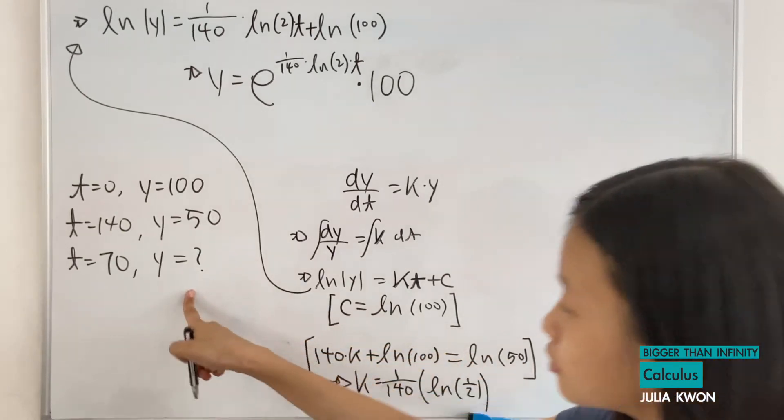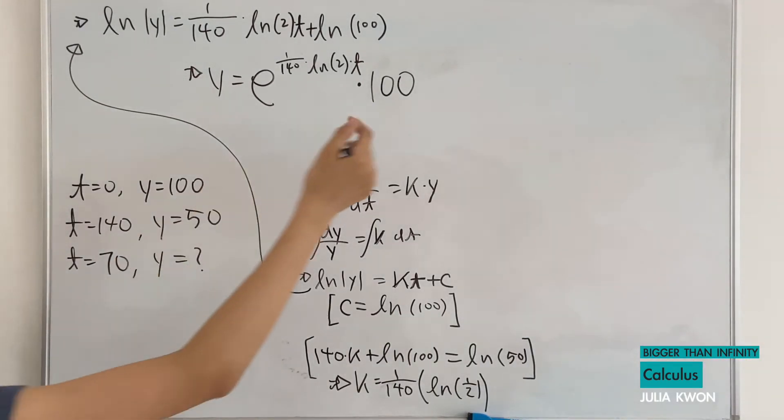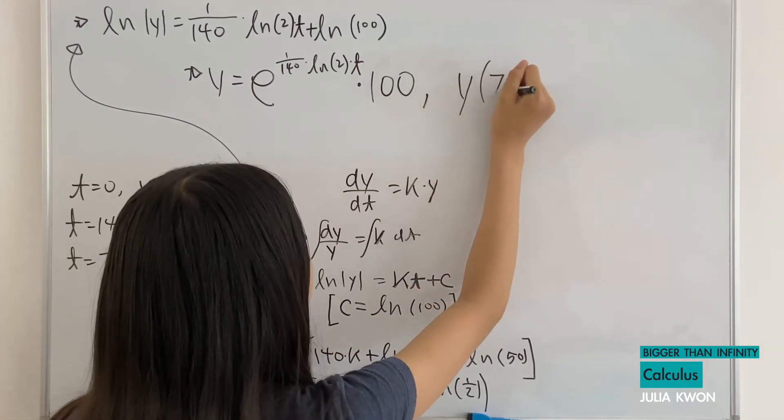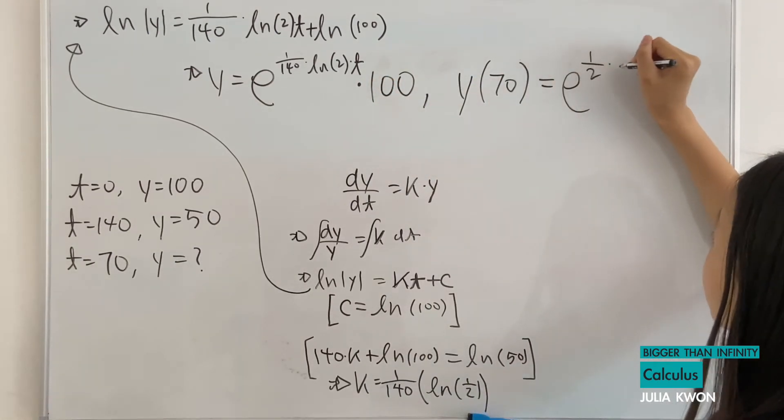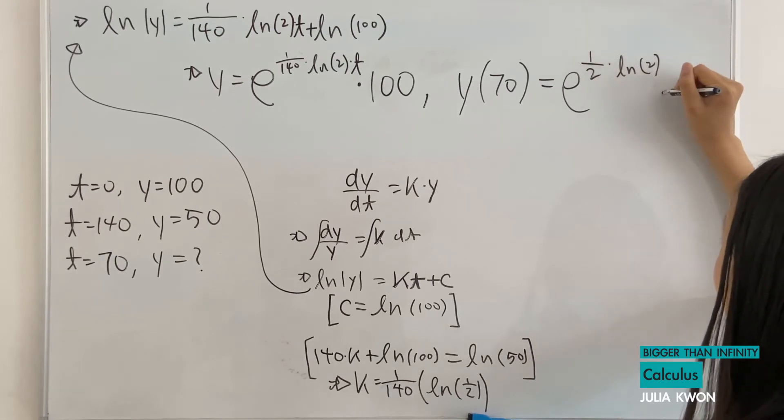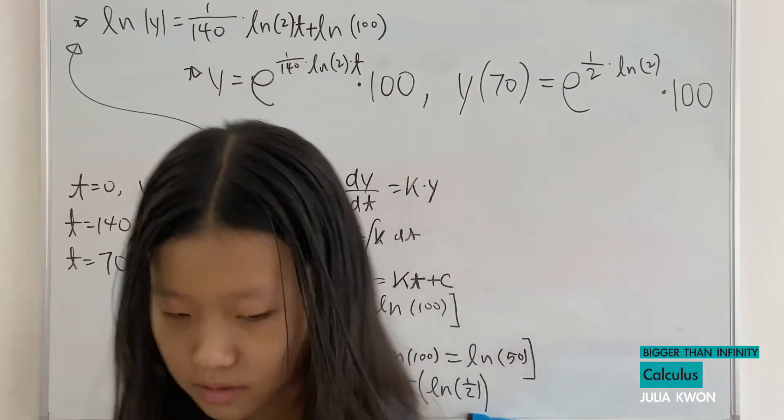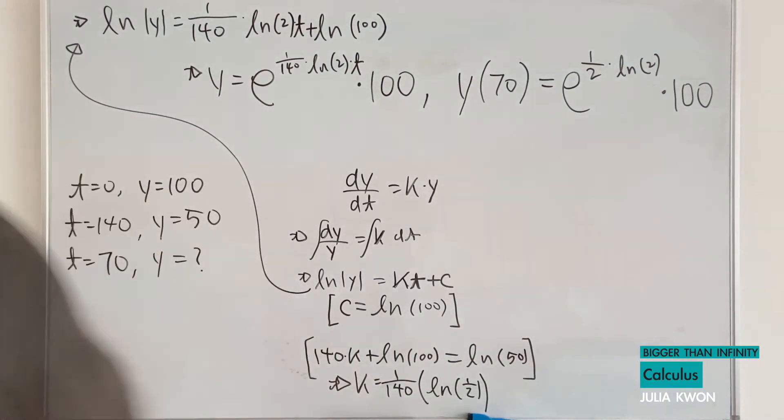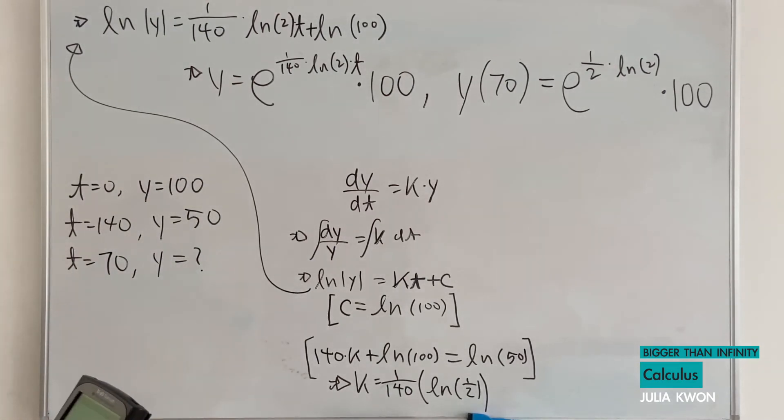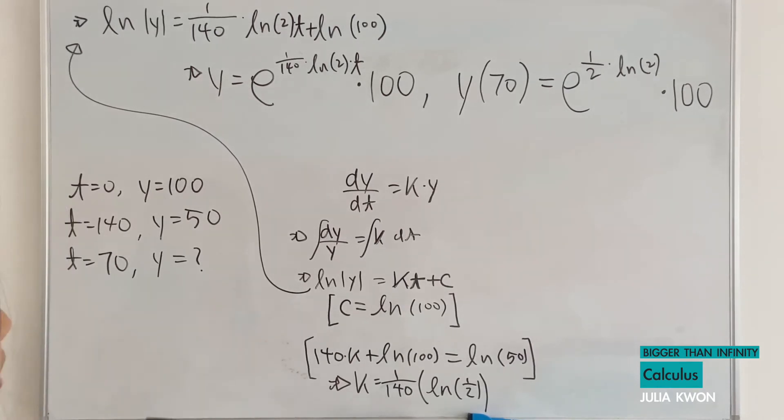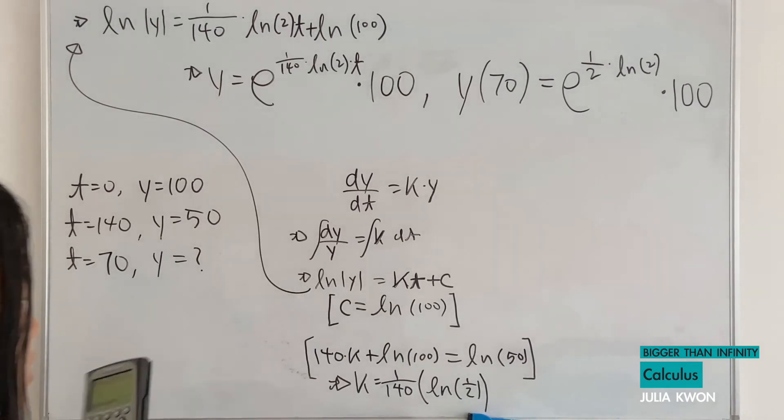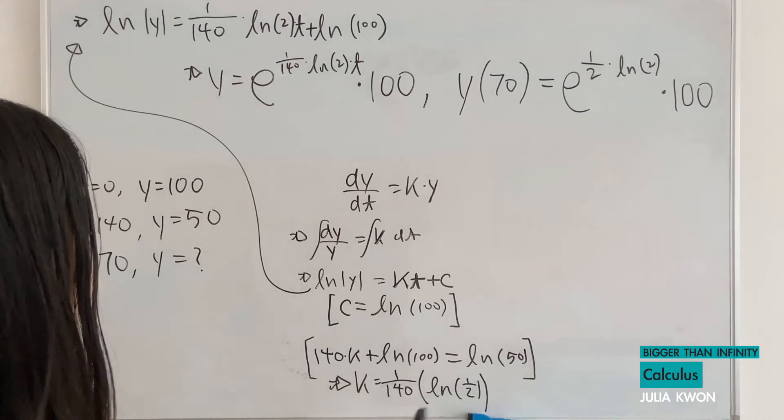Now, we're trying to find the y value when t is equal to 70. If we put in t is equal to 70, y of 70 will be equal to... 70 divided by 140 will be 1 over 2, multiplied by ln of 2, multiply everything by 100. And you put this into your calculator, 100 multiplied by e to the power of 0.5 multiplied by ln of 2. I did not get the right answer. So that means that I made a mistake somewhere. And I see the mistake. K is equal to ln of 1 over 2, not 2.